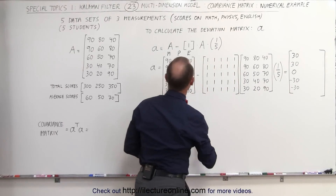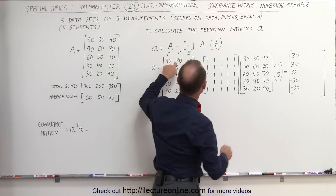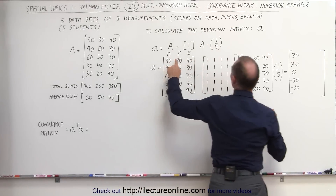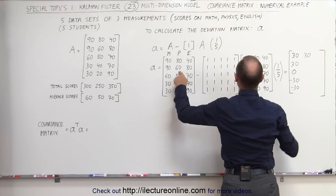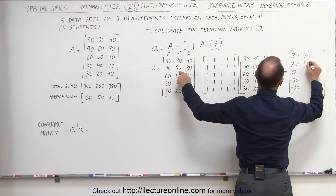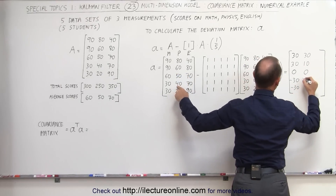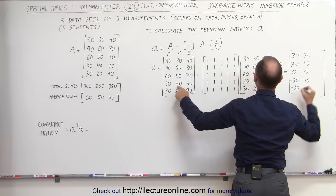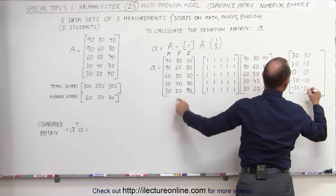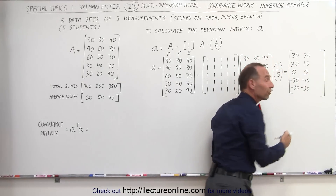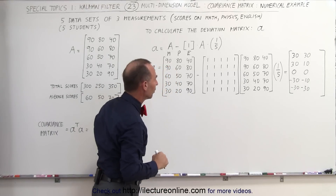We do that again for the physics scores. The average physics score is 50. The first reading is 80, so we get 80 minus 50, which is 30. Then 60 minus 50 is 10. Then 50 minus 50 is 0. Then 40 minus 50 is minus 10. And 20 minus 50 is minus 30. Again, those are the differences between the average scores and the scores of the individual students.